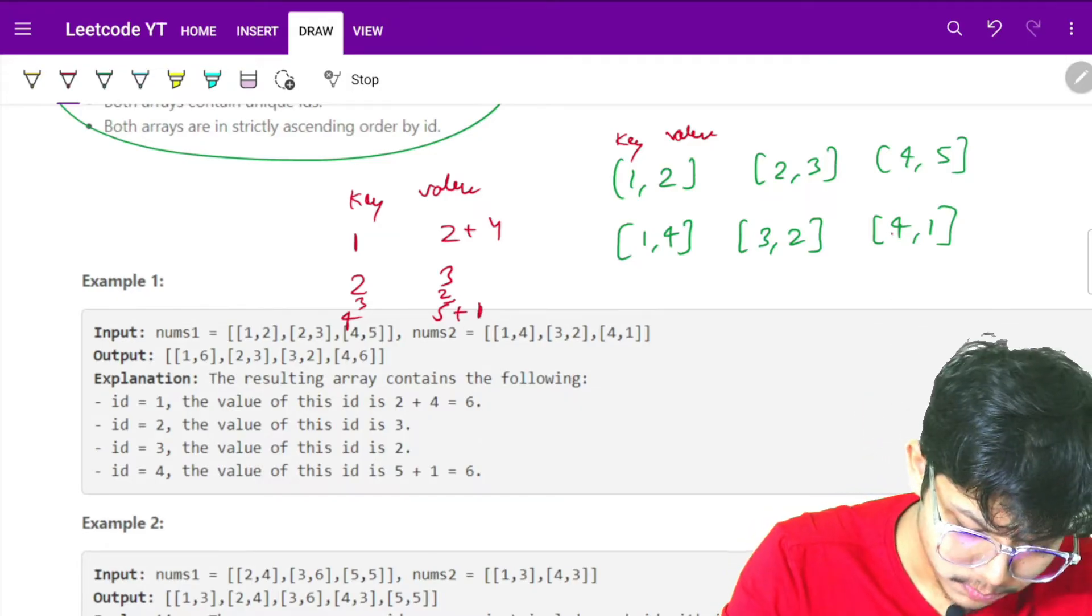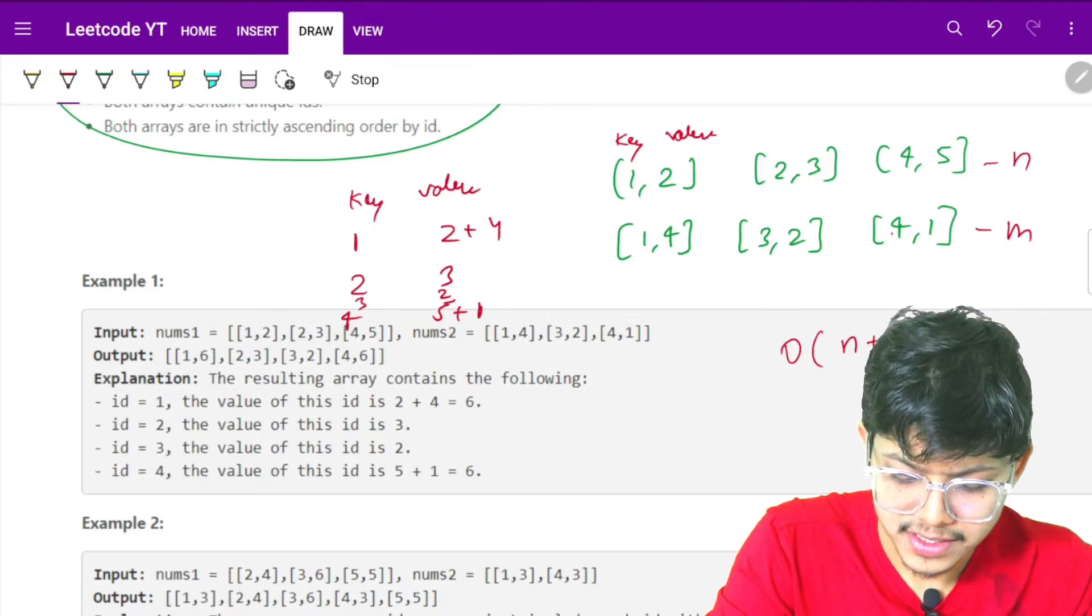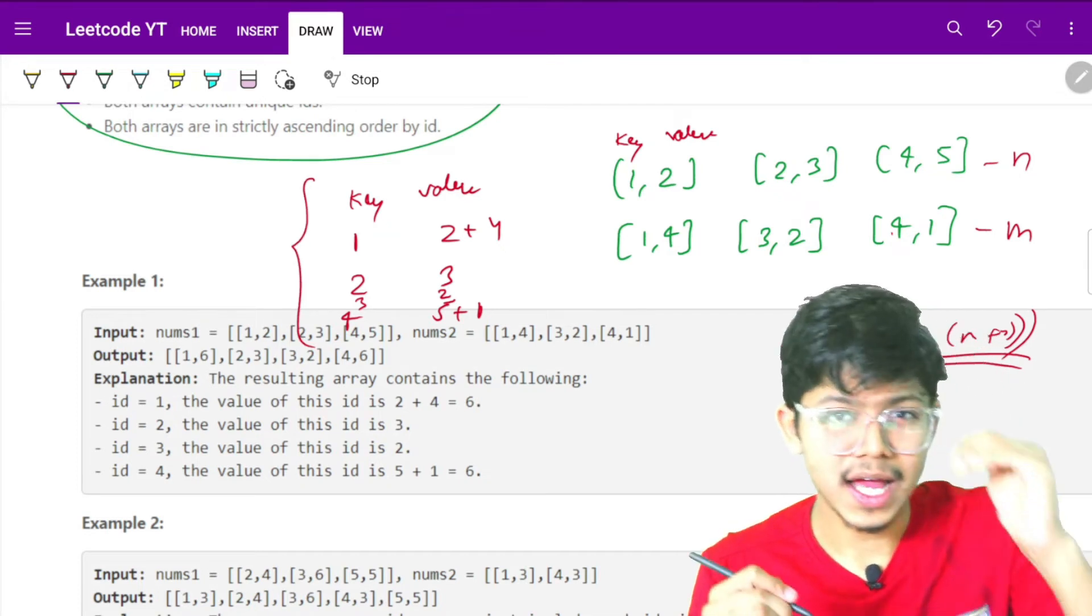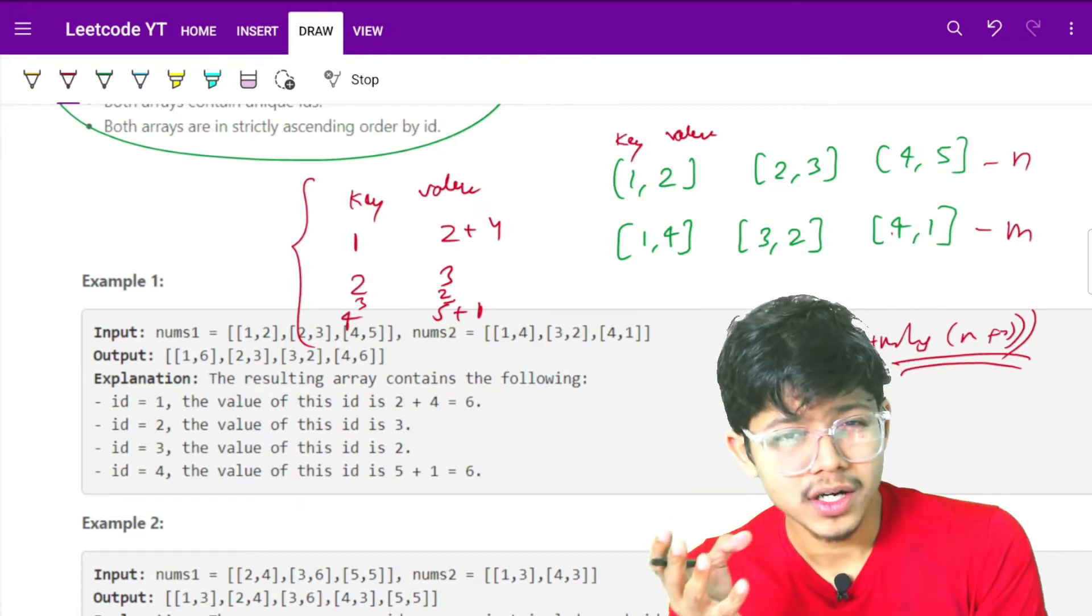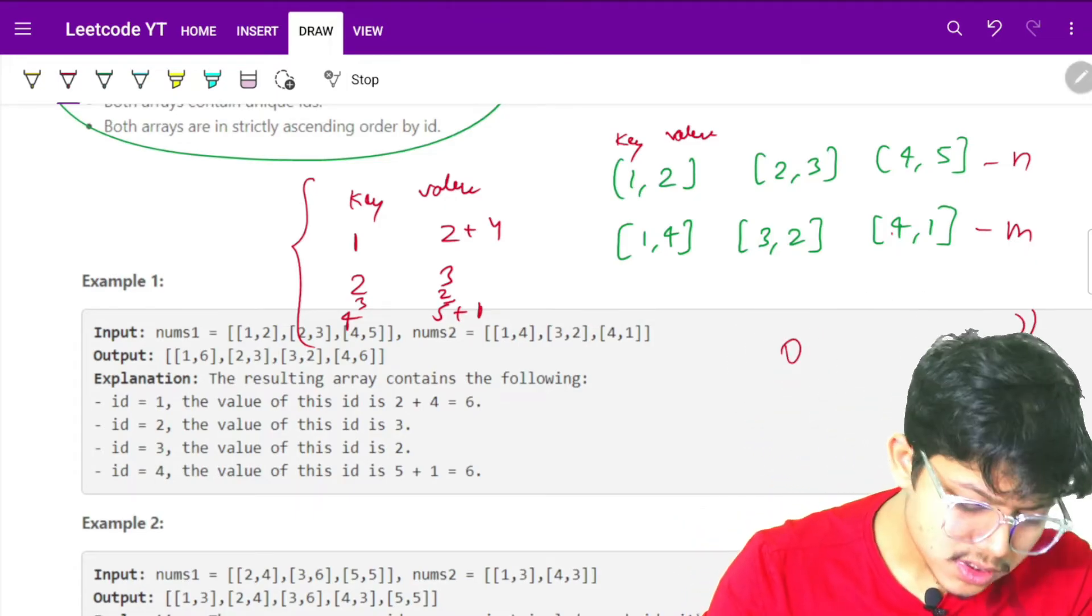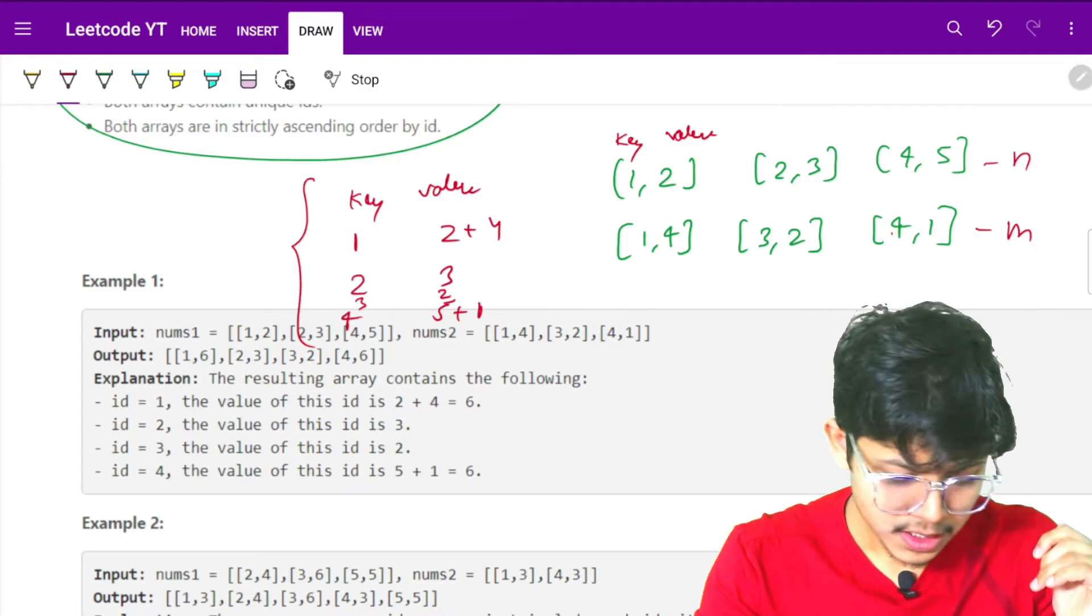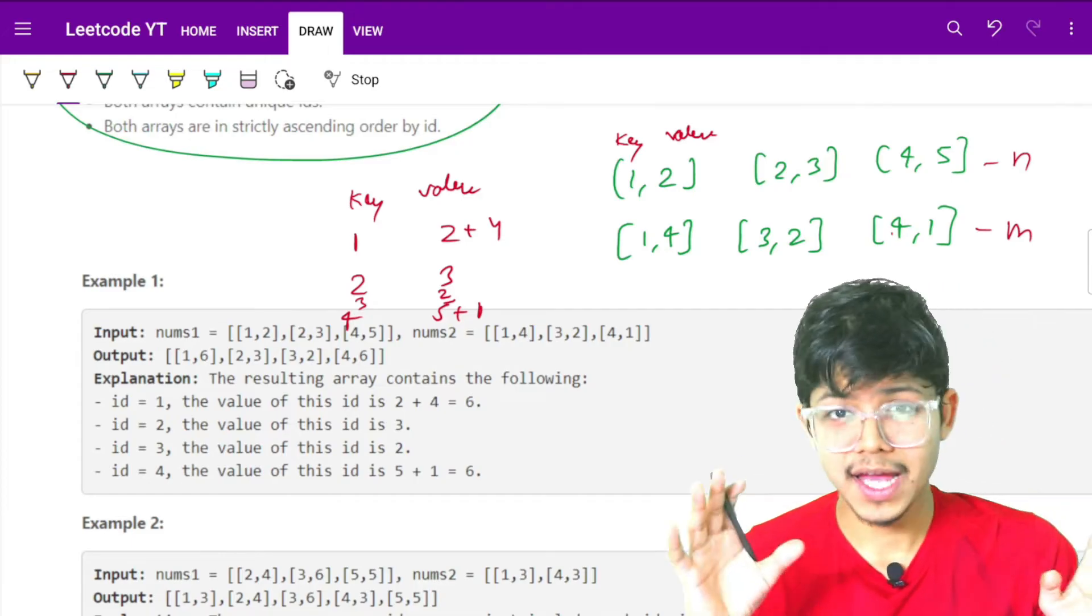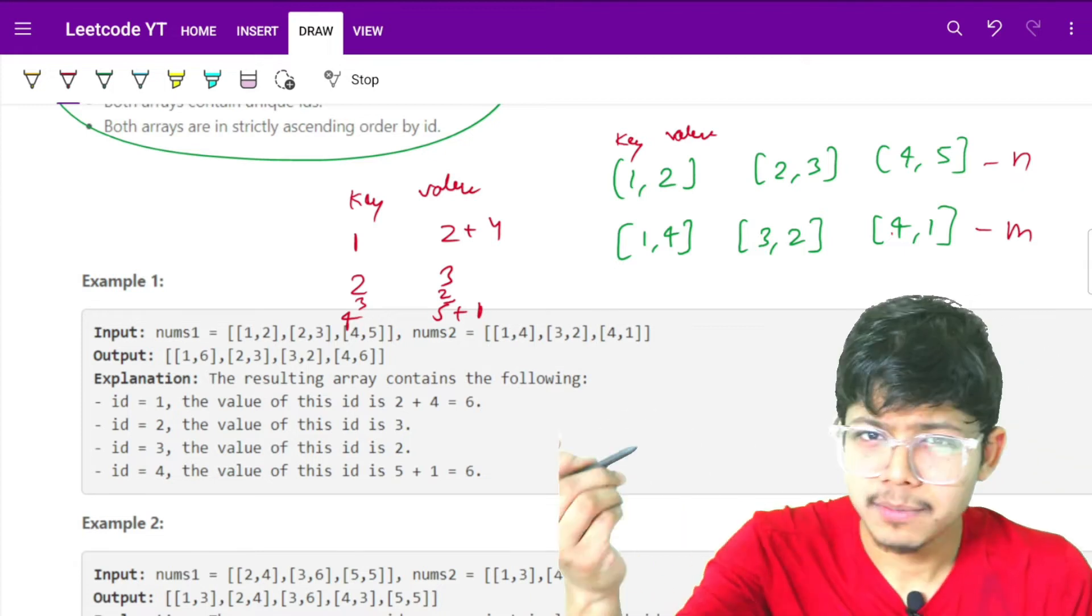3 will come here, 4 is already in the map so I add 1. If it is n and m, the complexity is O(n+m log(n+m)) if you use a map. Since we're storing keys in sorted order, we need to use an ordered map. This is one brute force solution we can opt to take.